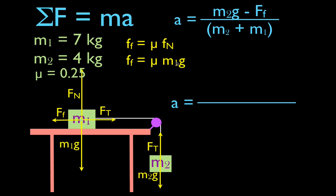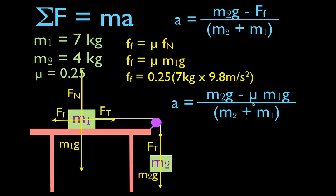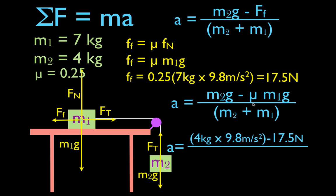Plugging into the acceleration equation: M2g minus the friction force equals 4 times 9.8 minus 17.15, divided by M1 plus M2 equals 7 plus 4. Remember the minus sign because friction acts in the opposite direction. We get an acceleration of 1.97 meters per second squared for both objects.